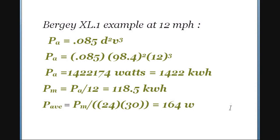Let's take the Burgi unit from the last lesson as an example, and see what it would do at 12 miles per hour. Taking the formula, plugging in the rotor diameter of 98.4 inches and a wind velocity of 12 miles per hour, and multiplying it out gives 1,422,174 watt-hours, which is 1,422 kilowatt-hours per year. So if you have a Burgi unit and a 12 mile-per-hour average wind, it'll generate 1,422 kilowatt-hours in a year, assuming your installation is compatible with that 12 mph condition.